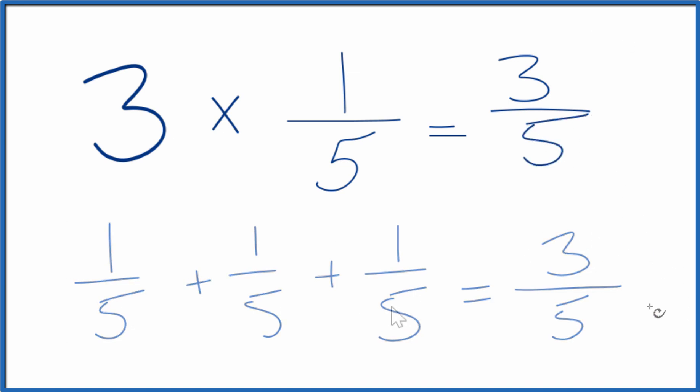There is another way you could do this. You could take three, call that three over one. It's still three because you're dividing by one. Now you have a fraction and you can multiply the fraction times one-fifth.